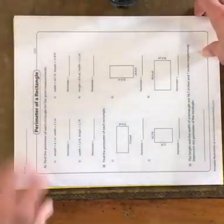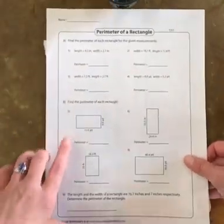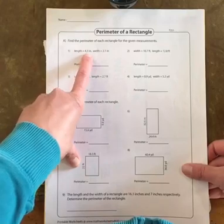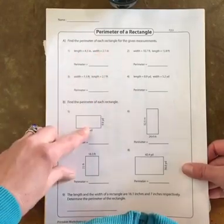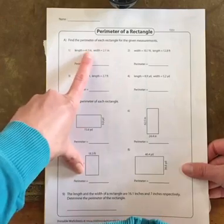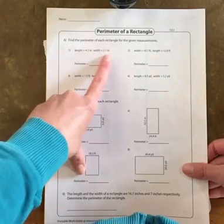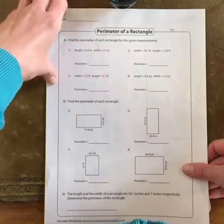I'm gonna have us do problem one on your practice sheet from today together. You are given the length and the width of a rectangle and are being asked to find the perimeter of that rectangle. The length is 4 and 3 tenths inches and the width is 2 and 1 tenths inches.